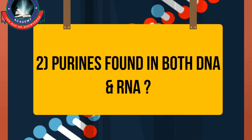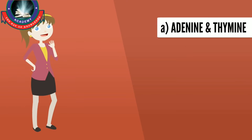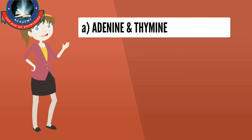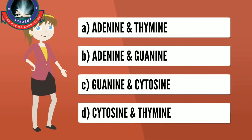Proceeding with the second question: Purines found in both DNA and RNA. The options are — Option A: adenine and thymine. Option B: adenine and guanine. Option C: guanine and cytosine. Option D: cytosine and thymine.